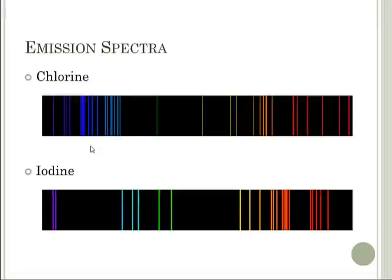Here's just a couple. Chlorine. Obviously, many more wavelengths emitted than hydrogen, which only had four wavelengths in the visible spectrum. This has many wavelengths. And iodine has many wavelengths, not quite as many as chlorine. But these are like a fingerprint. There are no other elements that emit light like iodine does. There are no other elements that emit light like chlorine does.